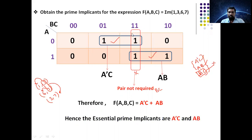Please be careful: when grouping is already done, there is no need to group those cells again. Essential prime implicants are the prime implicants required to cover all the ones or all the zeros present in the K-map. Whereas prime implicants are each and every sum term or product term present in the minimized expression of the given Boolean expression. I hope you understand the concept of prime implicants. We will see the next topic in the next video. Thank you and have a nice day.